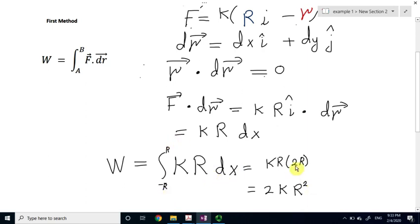From minus R to R, you will get 2R, and the answer is 2 times the constant k times the radius squared. So, this is the work done by the force.